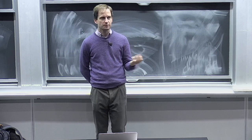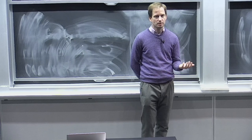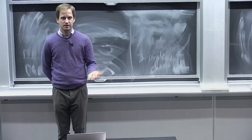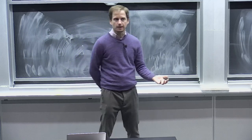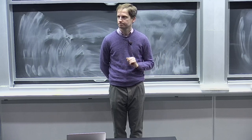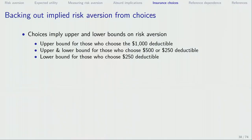For each contract, we can write down what the indirect utility function is. It depends on people's wealth — so we have to make some assumption about how wealthy people are — as well as the premium, the deductible, and the subjective probability of a claim occurring in that year. We assume only one claim per year. We can then back out the implied risk aversion from people's choices.